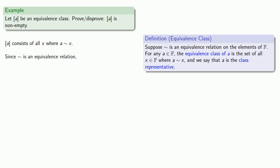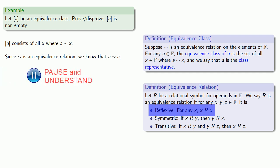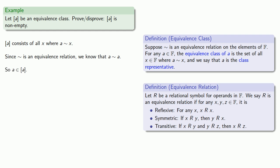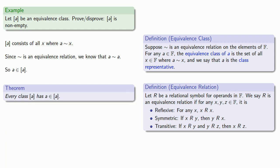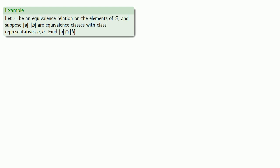Since squiggle is an equivalence relation, we should remember what an equivalence relation is. Since it is an equivalence relation, we know it is reflexive, and so we know that A squiggle A. That means A itself must be in the equivalence class — in other words, every class includes its class representative. So we know our equivalence classes are not empty.